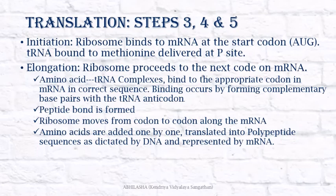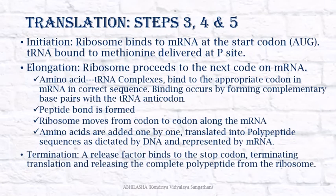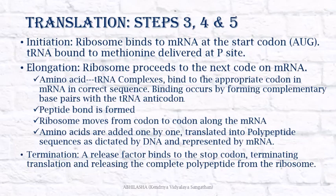Finally, when the ribosome comes across a stop codon on the mRNA, a release factor binds to the stop codon, stops the process of translation, and the complete polypeptide is released from the ribosome. Once the process is done, the large subunit and the small subunit again separate, and the messenger RNA is either used for more copies or degraded in the cytoplasm.